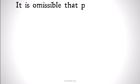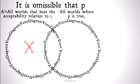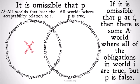We're moving on to our final predicate: it is omissible that P. We have the same setup — AI being all worlds that bear the acceptability relation to I, and our second circle being all worlds where P is true. It is omissible that P means there is at least one world where P is not true and all of the obligations are fulfilled. P is not included in those obligations. If it is omissible that P at I, there is some AI world where all obligations in world I are true but P is false.